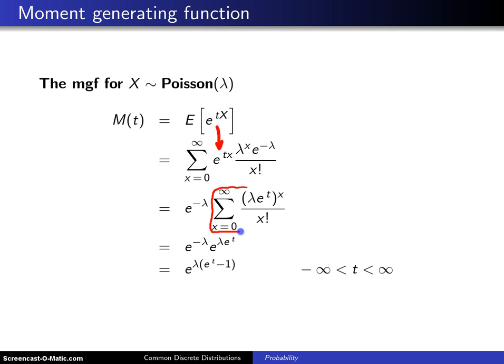If you write out the first few terms in this summation, the first term when x equals zero will be this quantity to the zero divided by zero factorial, which is one. The next term when x equals one will be lambda e to the t divided by one factorial. The next term when x equals two will be lambda e to the t squared divided by two factorial.